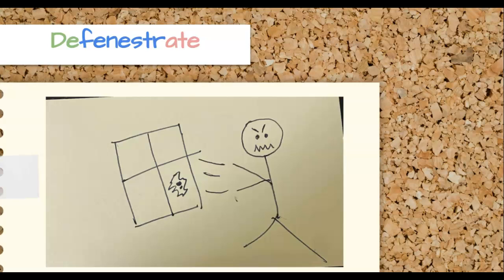Defenestrate means out the window with it. So let's break down this word into its word parts. The "de" in green means out or away. "Fenestre" in blue — the root word in French or Latin — means window. And then "-ate" at the end in pink tells us that this is a verb. So when you put it all together, defenestrate is a verb that means to throw it out the window. Now think of something really frustrating — something that makes you so frustrated you want to defenestrate it. Imagine grabbing that thing, finding the nearest window, and throwing it out. You have defenestrated it.